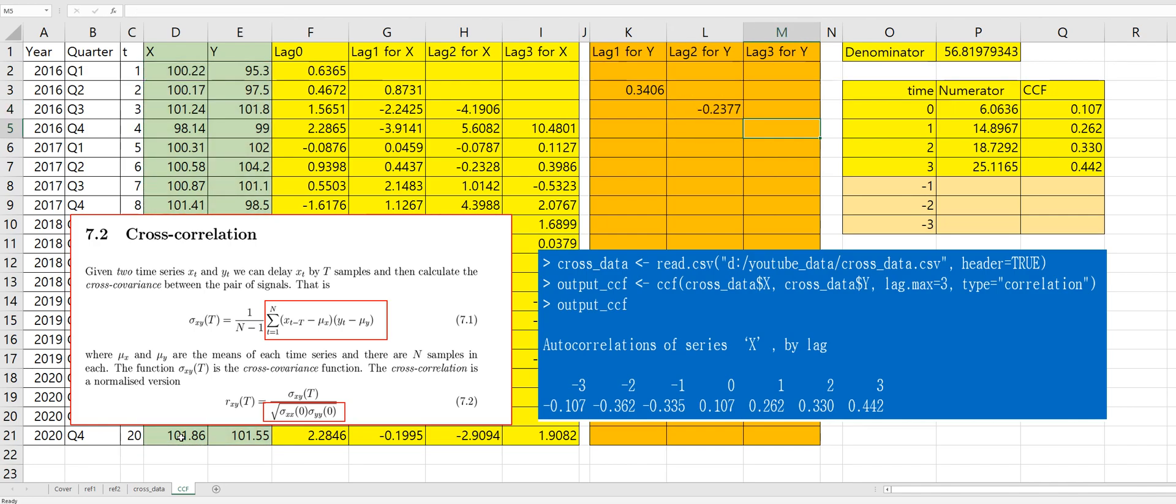So for lag three, for Y, average of Y variable times first value of X variable minus average of X variable.